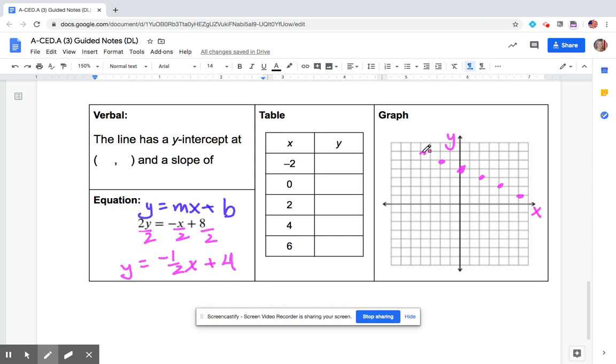That slope is negative. My y-intercept is at 4, 0 comma 4. My slope is, oh, -1/2 excuse me. And now I can fill up my table of values: 0 comma 4, 2 comma 3, 4 comma 2. And I can see the pattern here and I can see the pattern here.